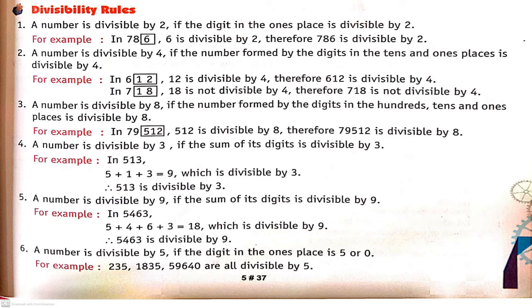If the answer is divisible by 3, then it means the number is divisible by 3. So, a number is divisible by 3 if the sum of its digits is divisible by 3.